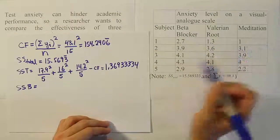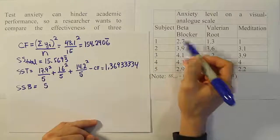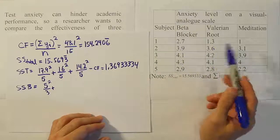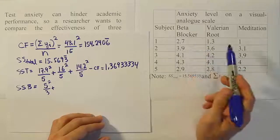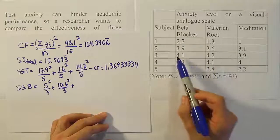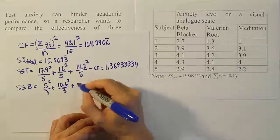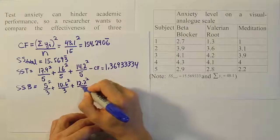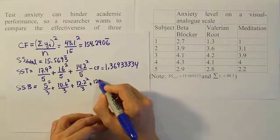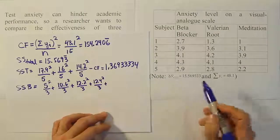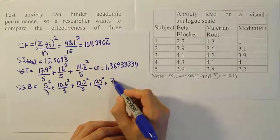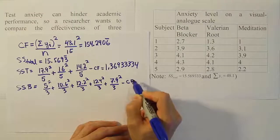Adding up row 1 we get 5, so 5² ÷ 3. Row 2 gives 10.6, so 10.6² ÷ 3. Row 3 gives 12.2, so 12.2² ÷ 3. Row 4 gives 12.4, so 12.4² ÷ 3. Row 5 gives 7.9, so 7.9² ÷ 3. All of that minus our correction factor.